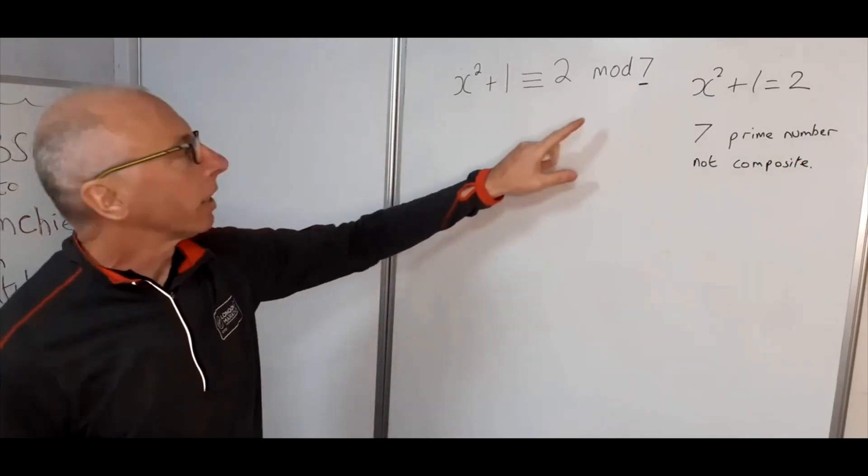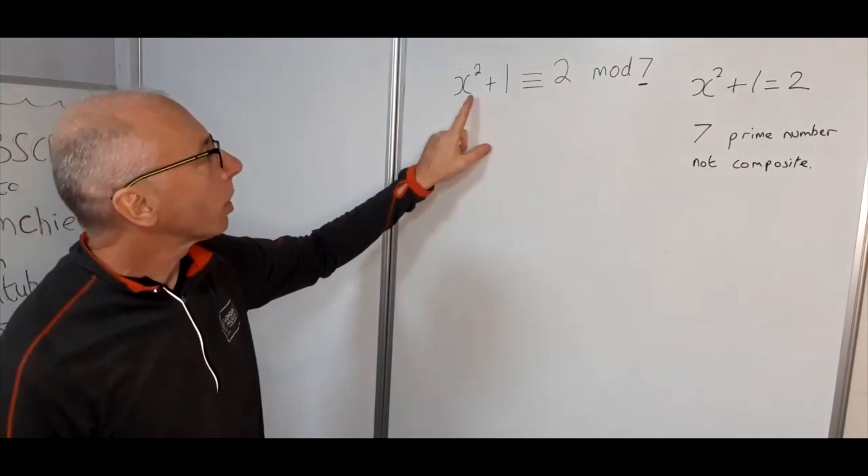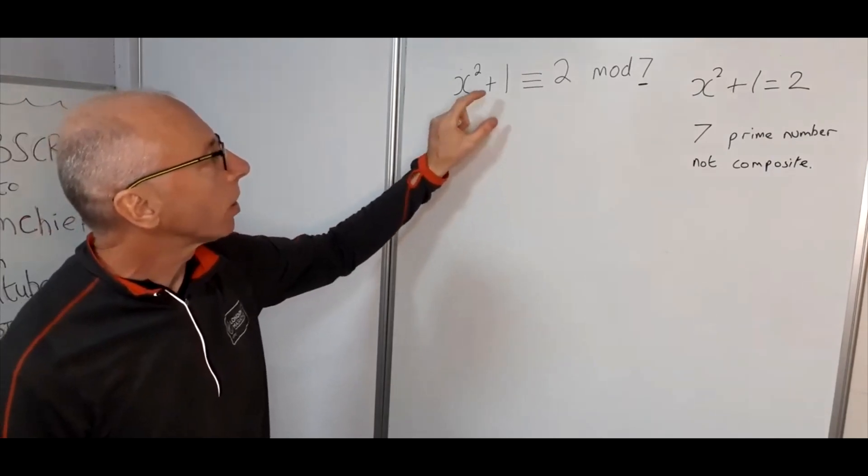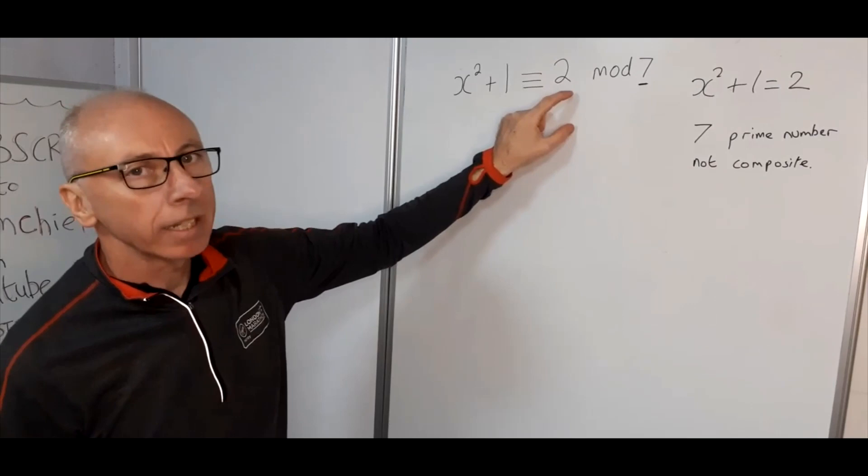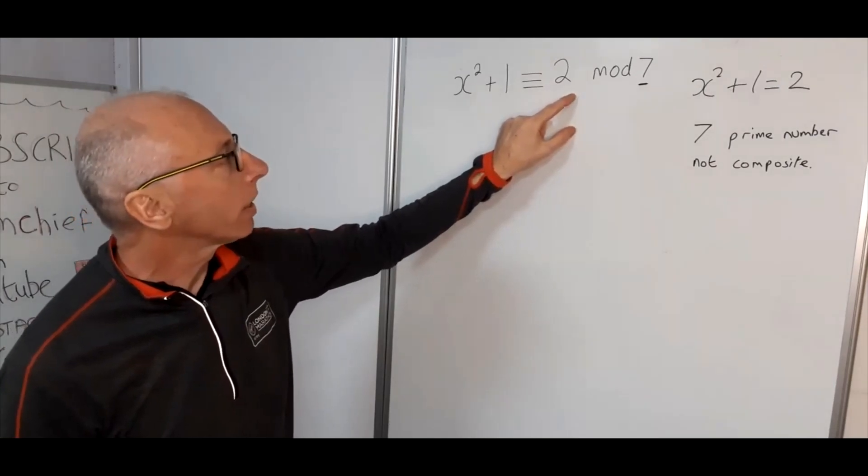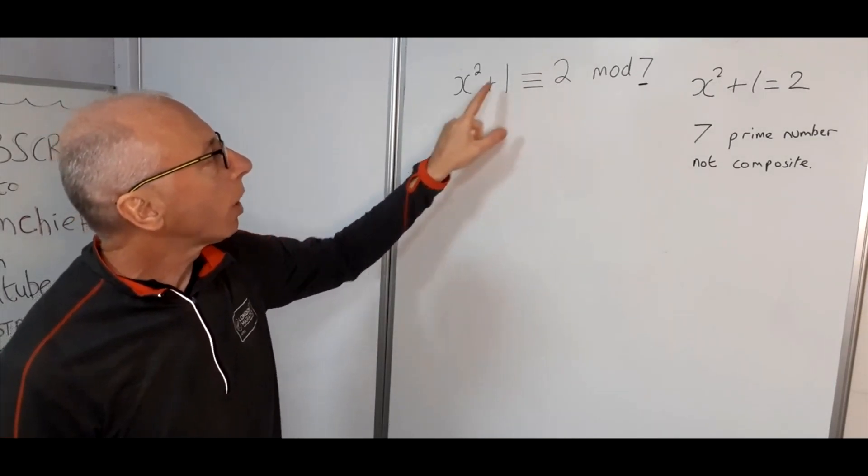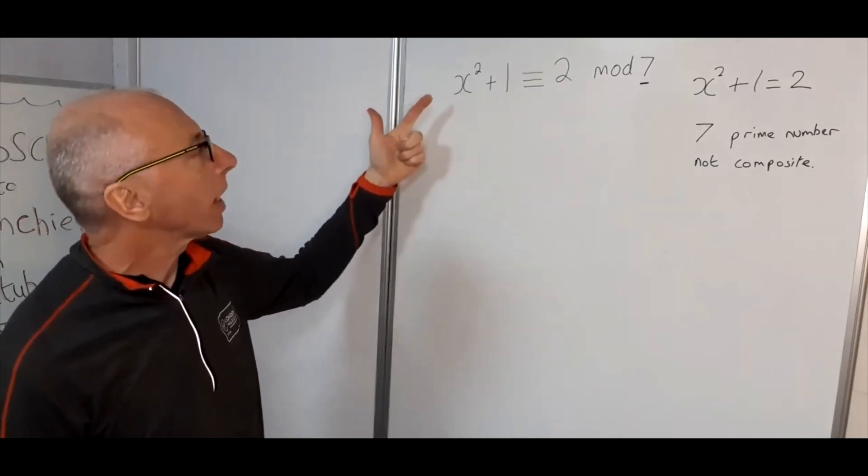So with that in mind, what we can do is try and get the x squared on its own and get a number on this side, or we can bring the 2 over this side and see if we can factor it.